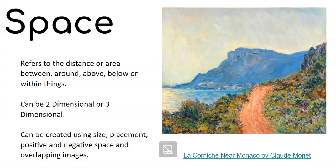The second element we're going to discuss is space. Space refers to the distance or area between, around, above, below, or within things. Space can be two-dimensional or three-dimensional, and it can be created by using size, placement, positive and negative space, and overlapping images.